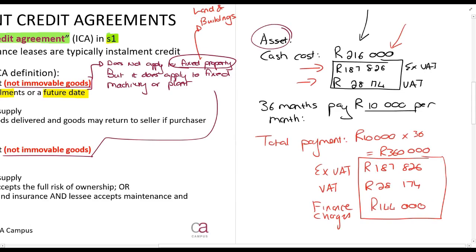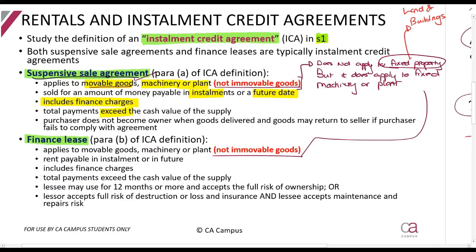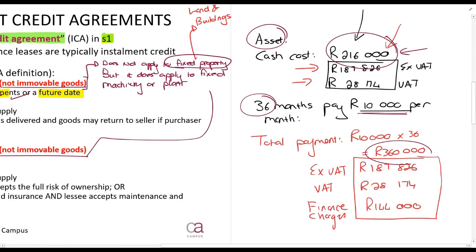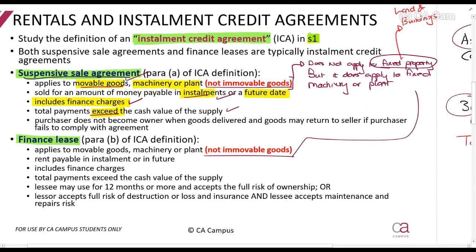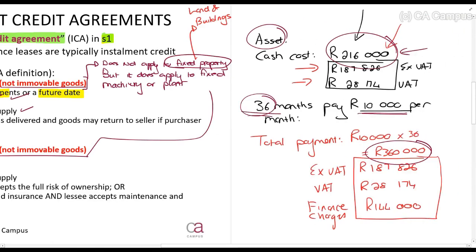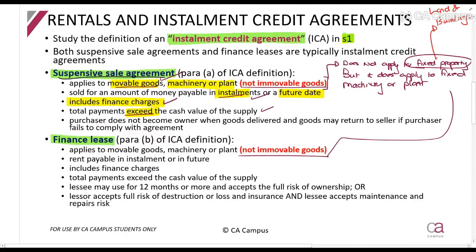I sell an asset with a cash cost of 216,000 rands, to be paid off at 10,000 rands a month for 36 months. Does it apply to movable goods? Yes. Is it sold for an amount paid in installments or at a future date? Yes, every month you pay 10,000 rands. Does it include finance charges? Yes. Does it exceed the cash value of the supply? Yes it does. And the purchaser does not become the owner when the goods are delivered, and goods may be returned if the purchaser fails to comply — you only become the owner after 36 months, and if you don't pay, I take the goods back. That is a suspensive sale agreement and it will be an installment credit agreement.